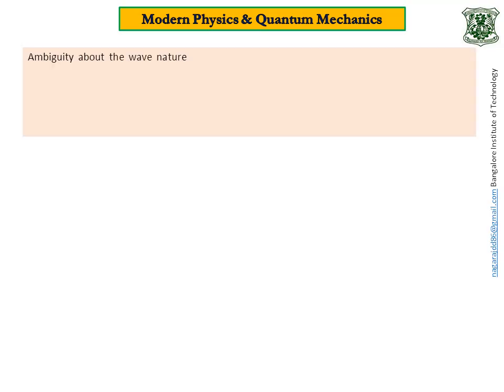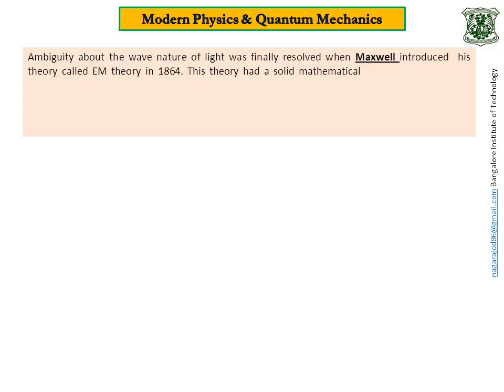The ambiguity of wave nature of light was finally resolved when Maxwell introduced his theory called electromagnetic theory in 1864. This theory had a solid mathematical support.